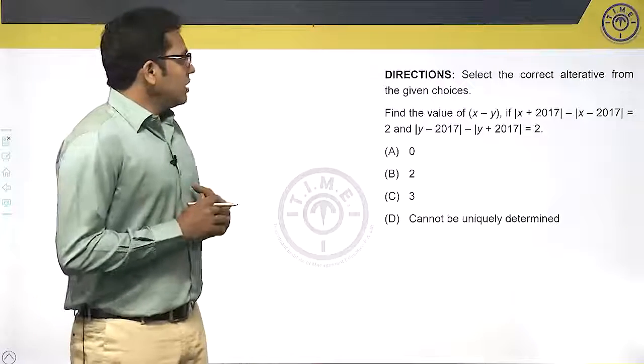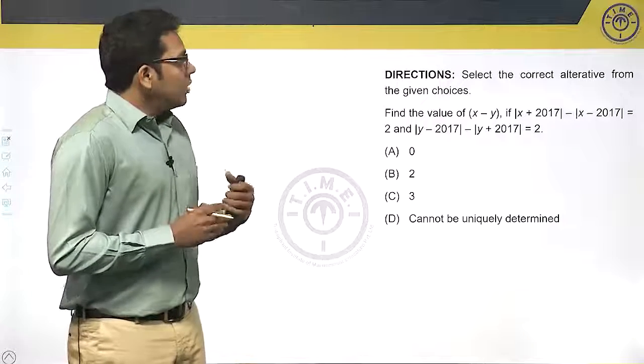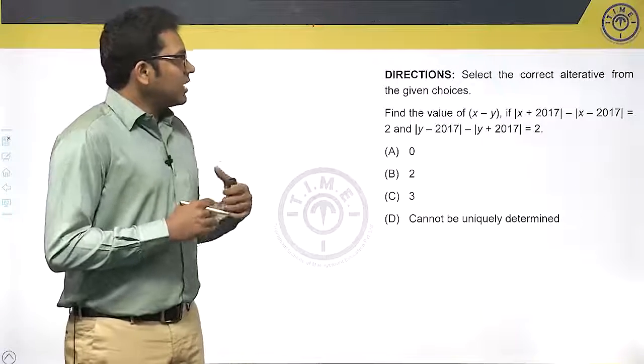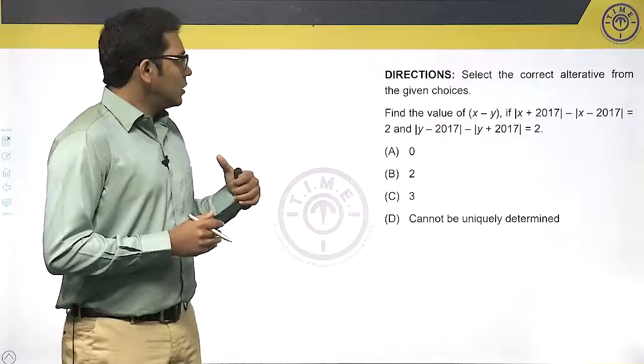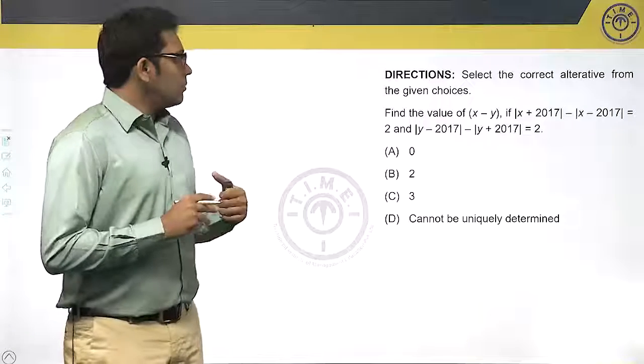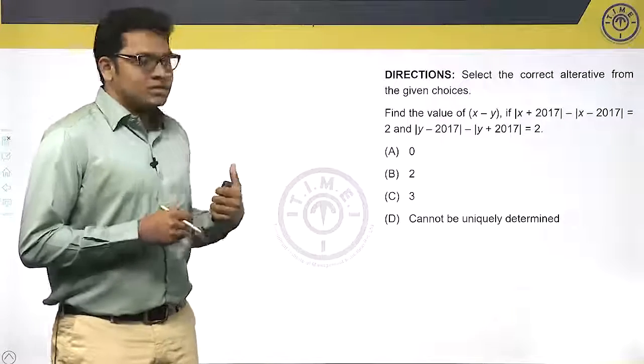Let's look at the question. Find the value of x minus y if |x + 2017| - |x - 2017| = 2 and |y - 2017| - |y + 2017| = 2.